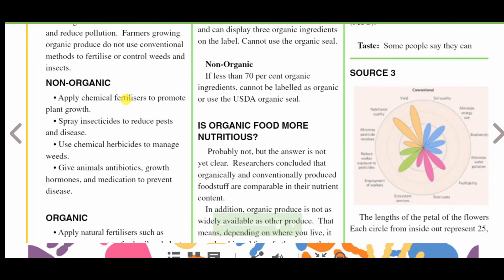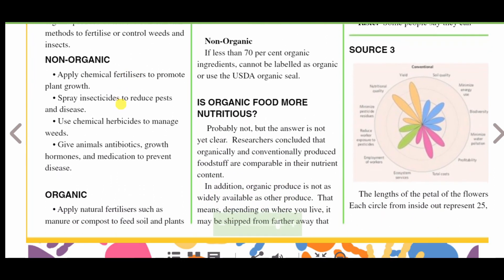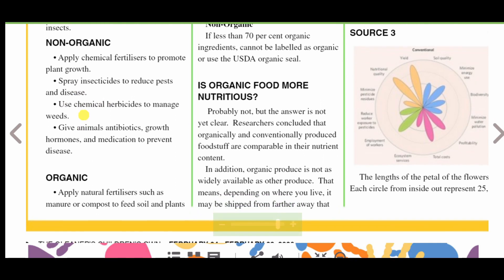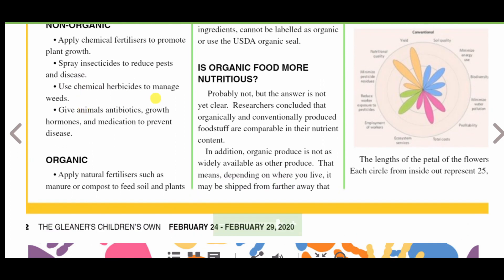Non-organic farmers apply chemical fertilizers to promote plant growth, spray insecticides to reduce pests and disease, use chemical herbicides to manage weeds, and give animals antibiotics, growth hormones, and medication to prevent disease.